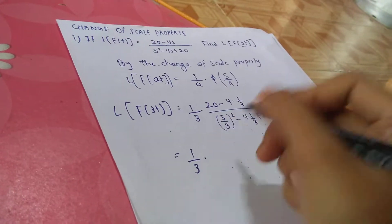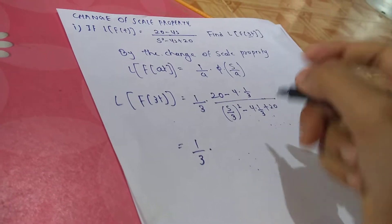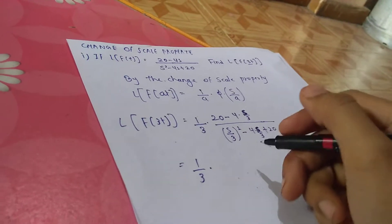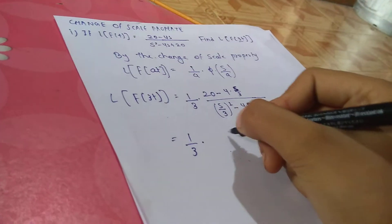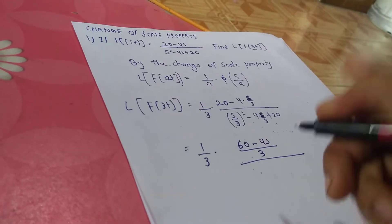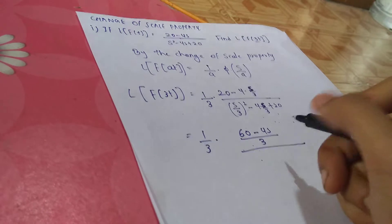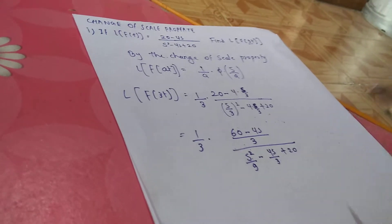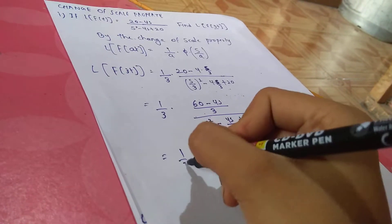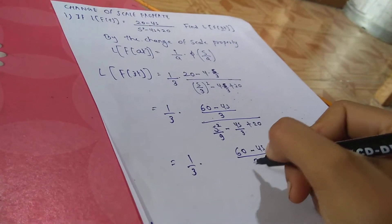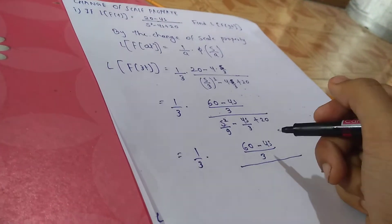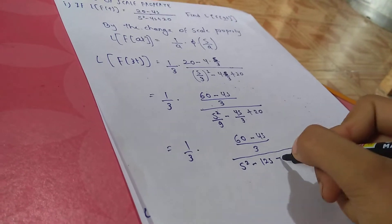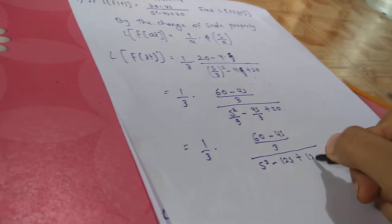Which gives (1/3) into s — s comes here and here again — into (20 minus 4s), so 20 into 3 is 60, minus 4s over 3, divided by s² over 9 minus 4s over 3 plus 20. Taking the LCM, which is 9, so it means s² minus 12s plus 180 times 1 over 3, divided by 9.